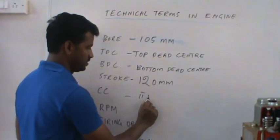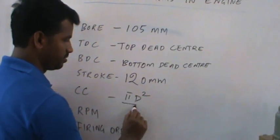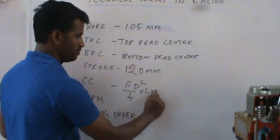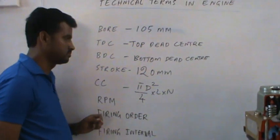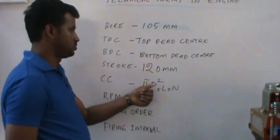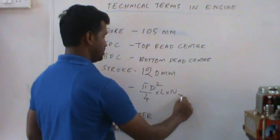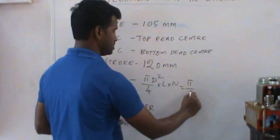π D² divided by 4, multiplied by L, multiplied by number of cylinders. D is in centimeters. If you are applying these values,